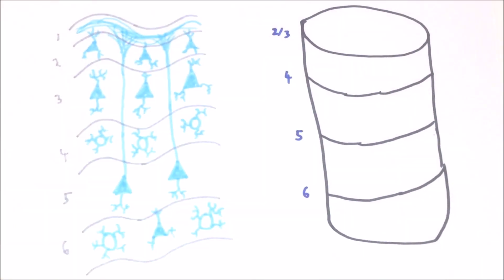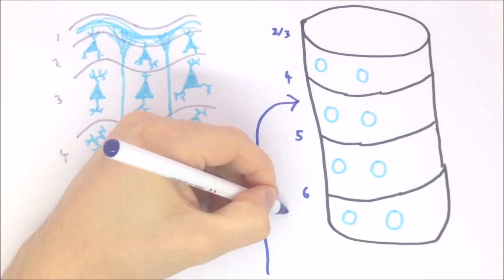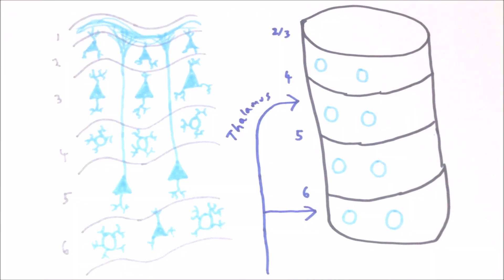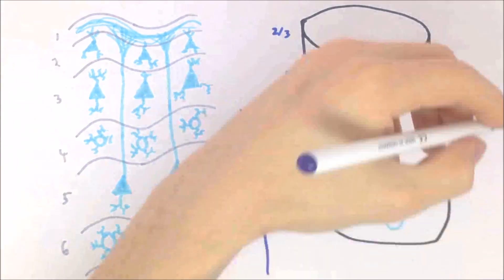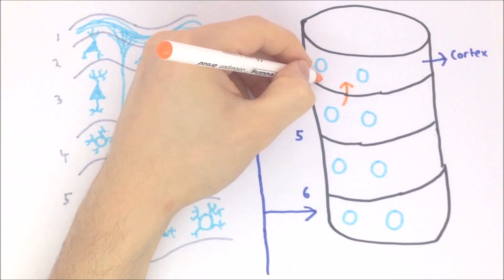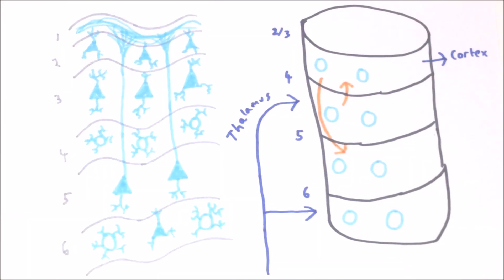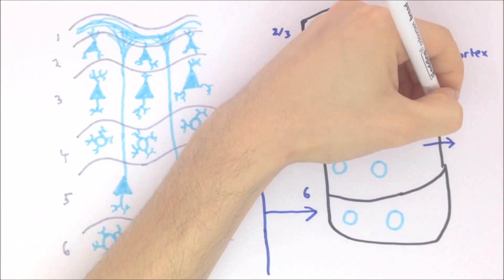This results in four functional layers of neurons. Input from the thalamus arrives primarily into layer four, and to a lesser extent into layer six. Neurons from layer four then project primarily into layers two and three. Layers two and three then project down into layer five, as well as projecting horizontally to other areas of the cortex.